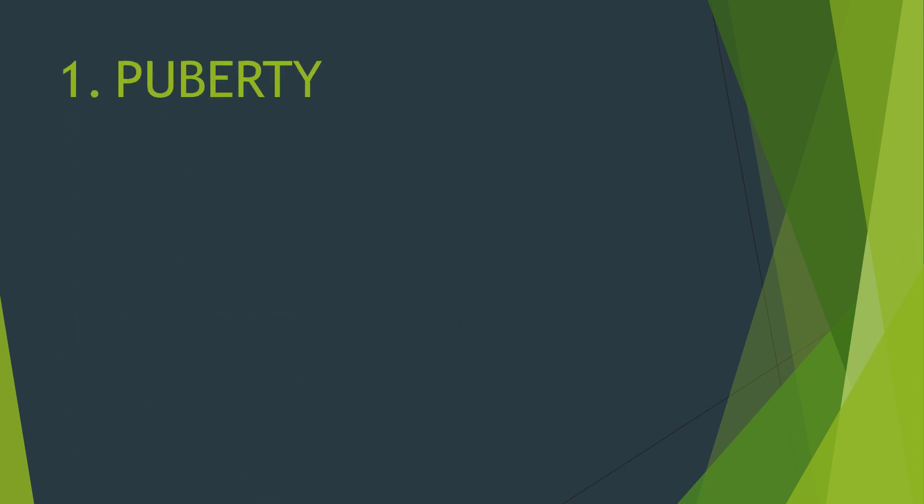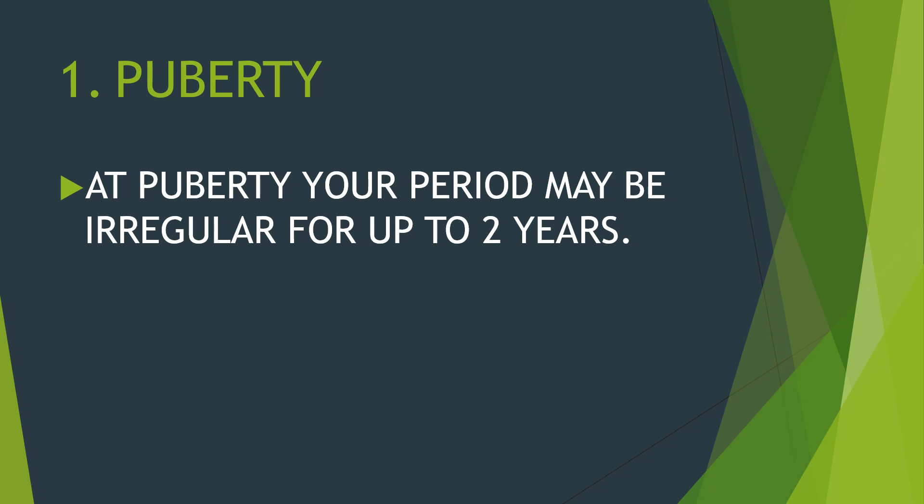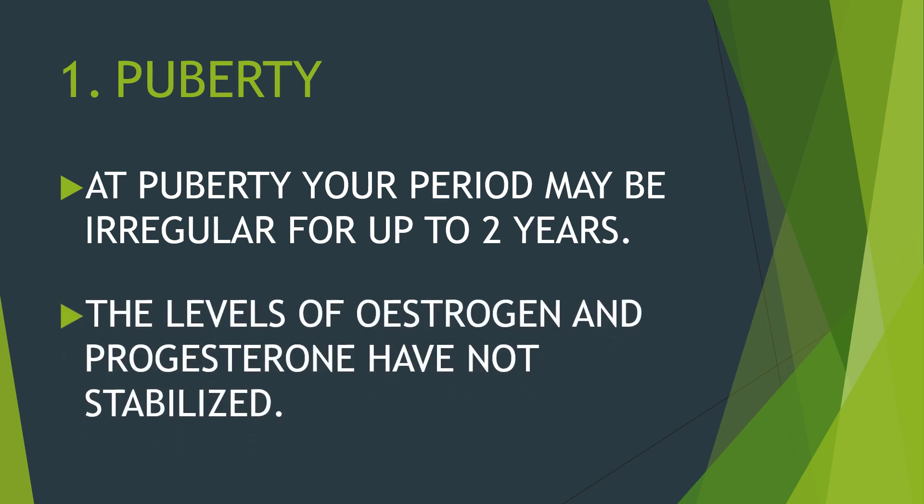Number one is puberty. At puberty, a girl's period may be irregular for up to two years. Within this time, the reason is that the levels of estrogen and progesterone have not yet stabilized. But after about two years, these hormonal levels should stabilize and your period is expected to become normal.